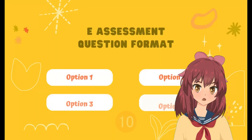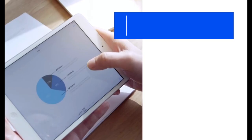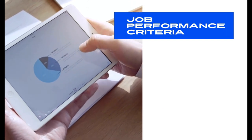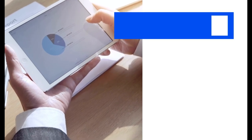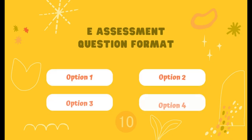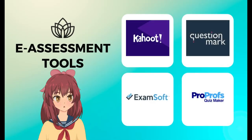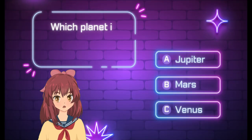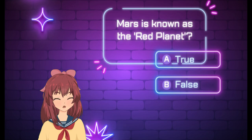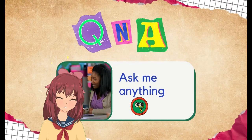Firstly, it is essential to ensure that the eAssessment accurately measures the intended learning outcomes or job performance criteria. This requires careful consideration of the assessment format and question types. eAssessment tools such as QuestionMark, ExamSoft, and ProProf's QuizMaker provide a variety of question types to choose from, including multiple-choice, true-false, and open-ended questions.